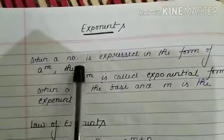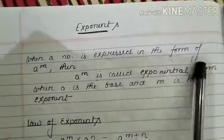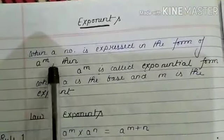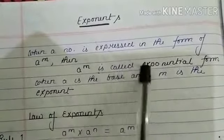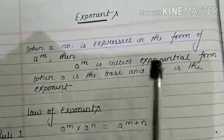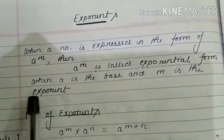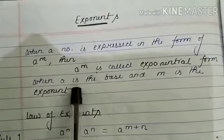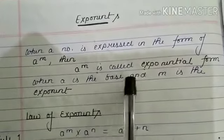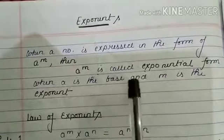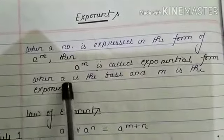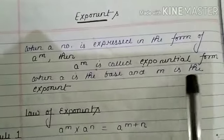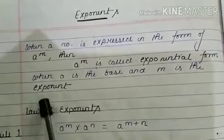When a number is expressed in the form a to the power m, then a to the power m is called exponential form, where a is the base and m is the exponent.